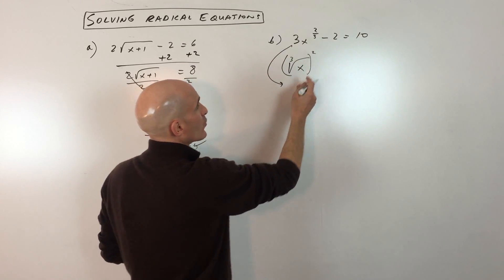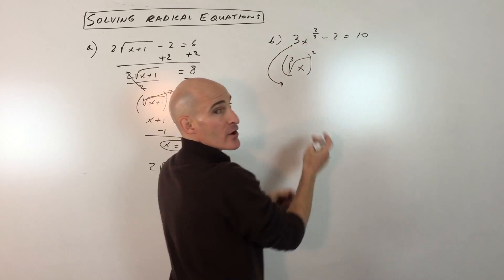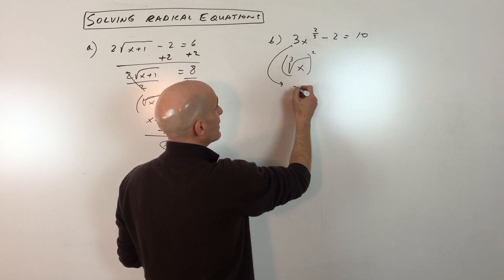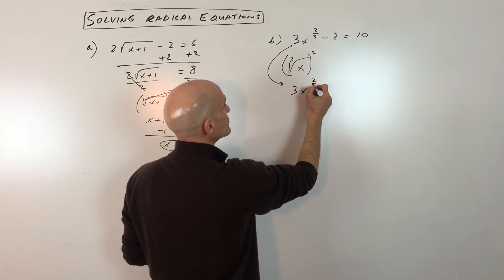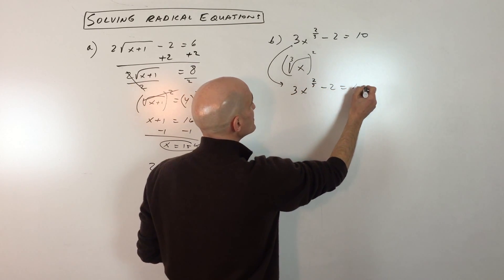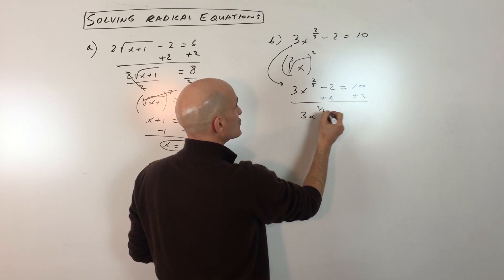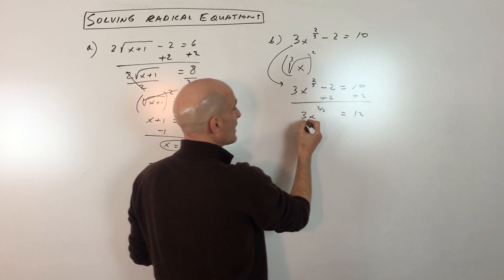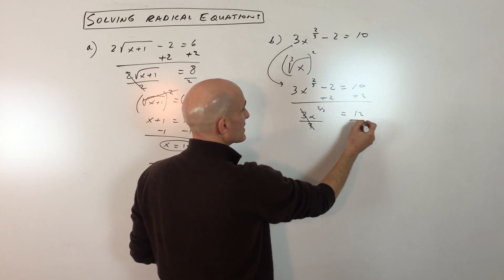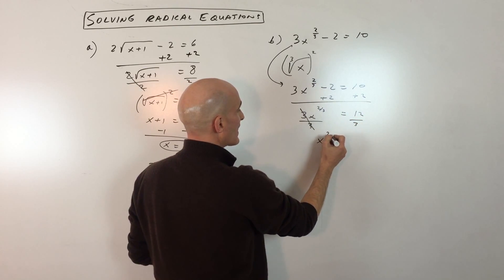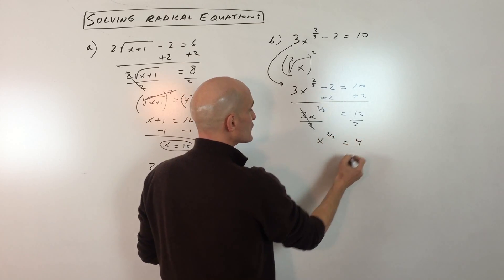What we're going to do is just work from the outside in towards this variable by doing the inverse or opposite operation. So we've got 3x to the 2 thirds minus 2 equals 10. I'm going to add 2 to both sides, and then we've got 3x to the 2 thirds equals 12. I'm going to divide by 3 because I'm trying to get that variable by itself. We've got x to the 2 thirds equals 4.